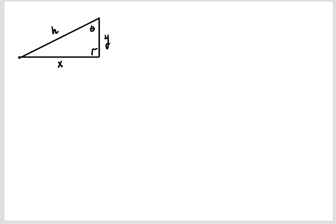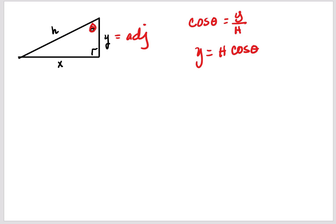Sometimes the data could be in the top right corner. Since the angle is at the top right corner, y is now adjacent because it's next to. Since y is adjacent, it's going to be cosine theta, which is y over hypotenuse, so y becomes h times cosine theta. And x becomes opposite, so this becomes sine theta, which is x over hypotenuse, so x is equal to h sine theta.